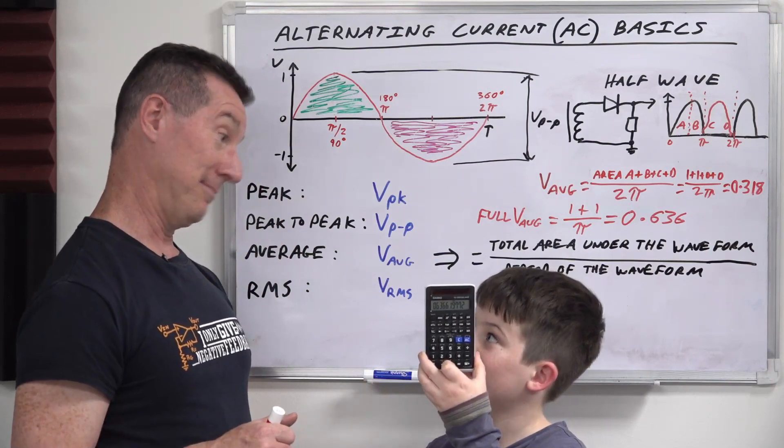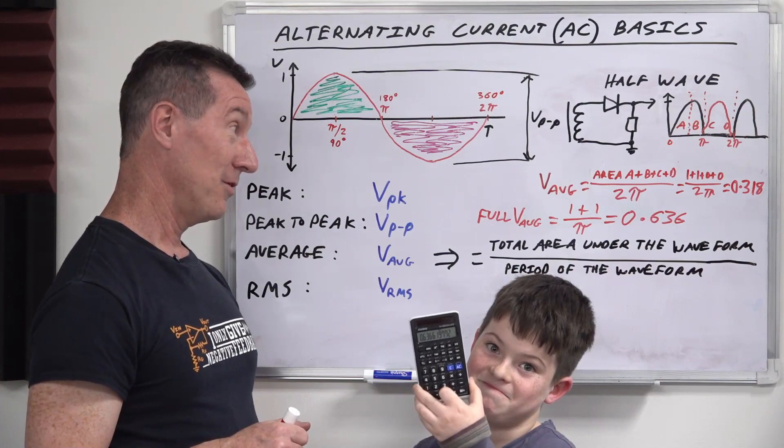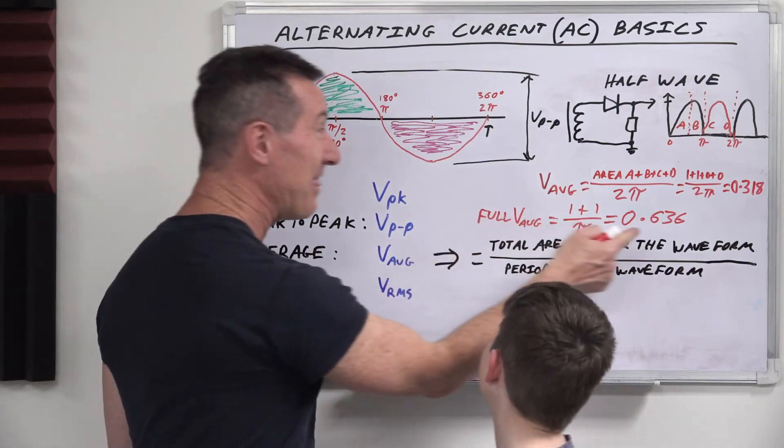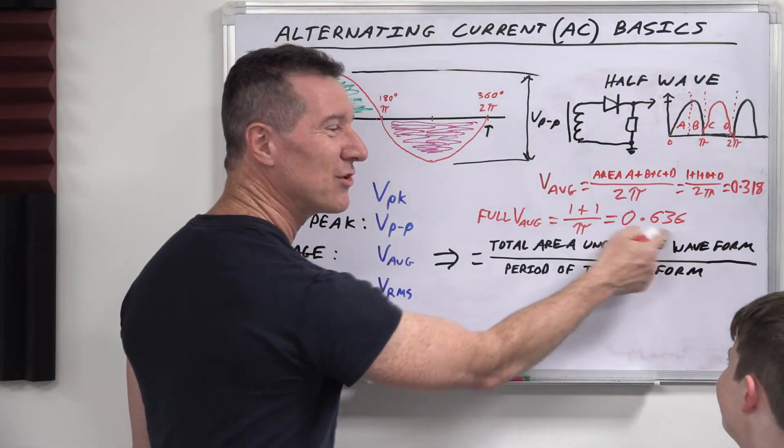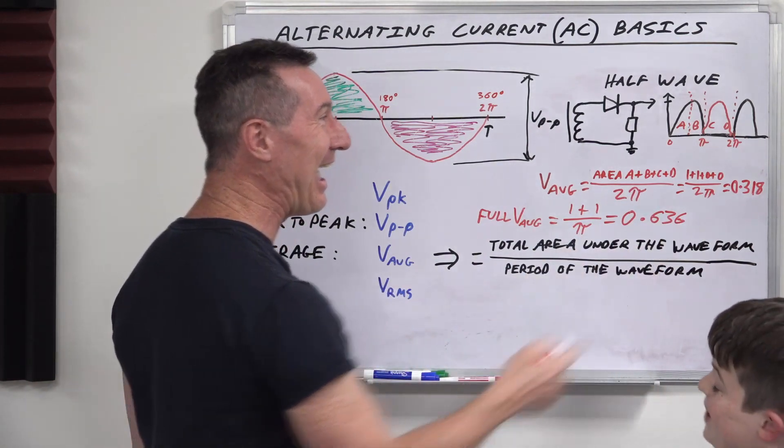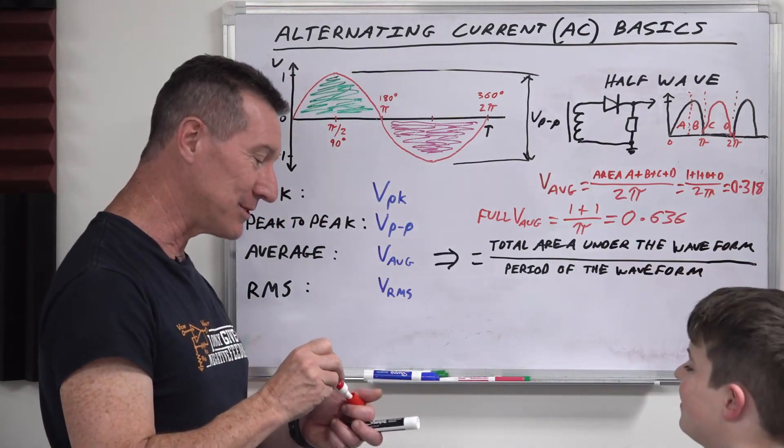So you reckon round it up to 0.637? Well, I'm going to say that it's 636 because that's kind of like symmetrical, and it's double 0.318 that I rounded before. So I'm sticking with 636.